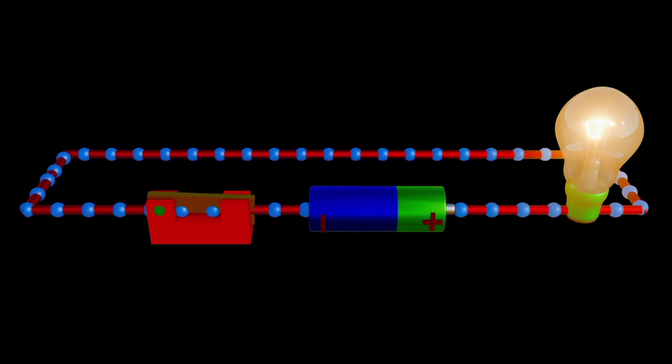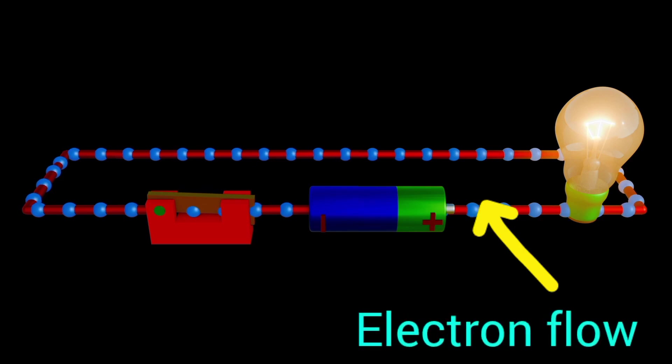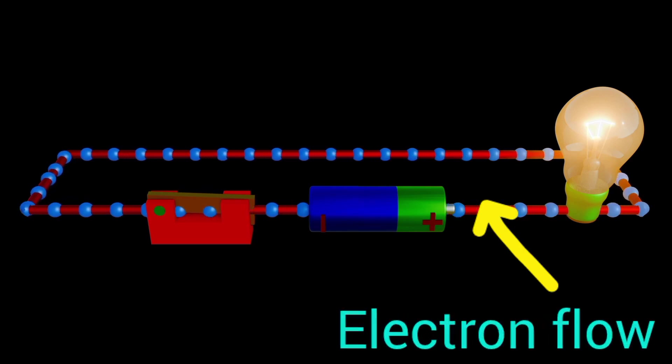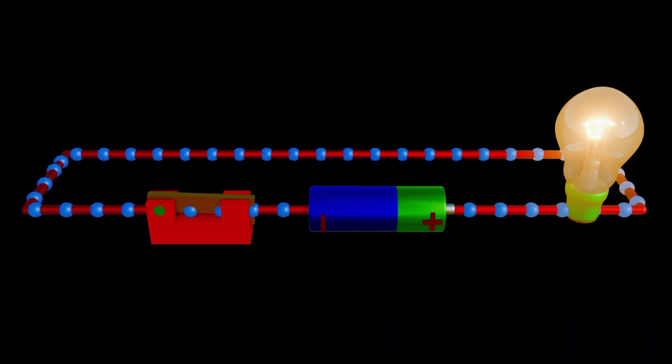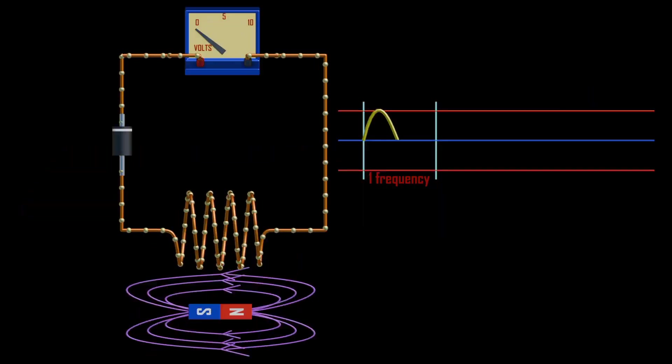On the other hand, the direct current just flows continuously in one direction, majorly from DC source such as battery. The aim of the rectification is to convert this AC current to a pure DC current.